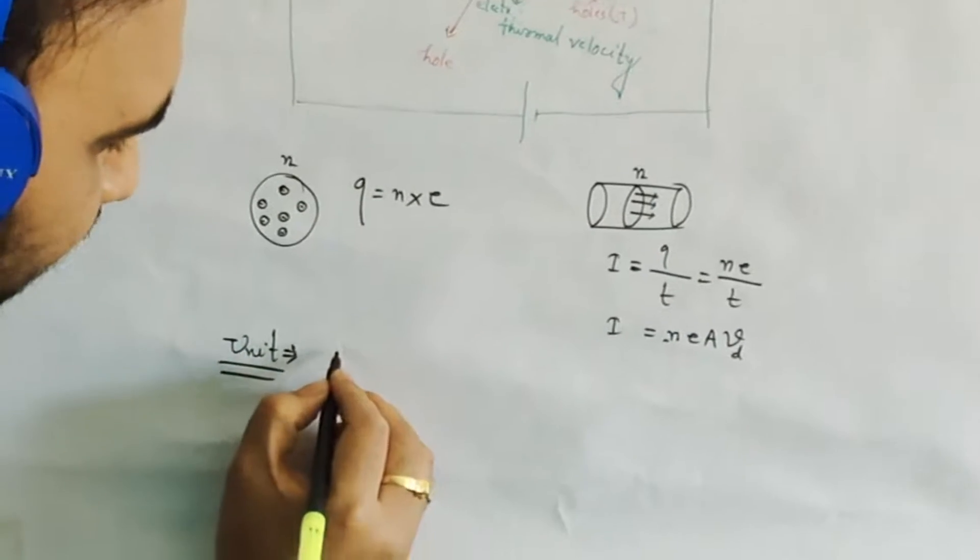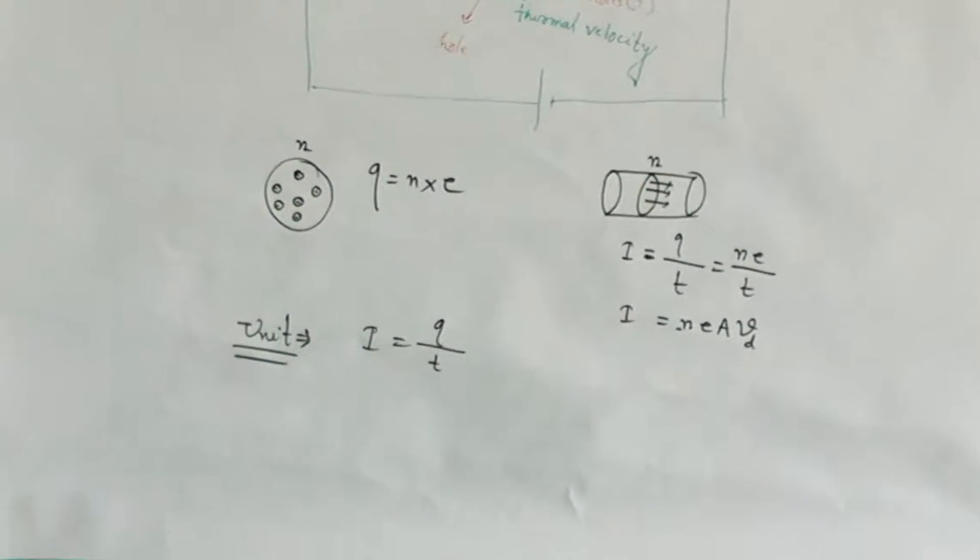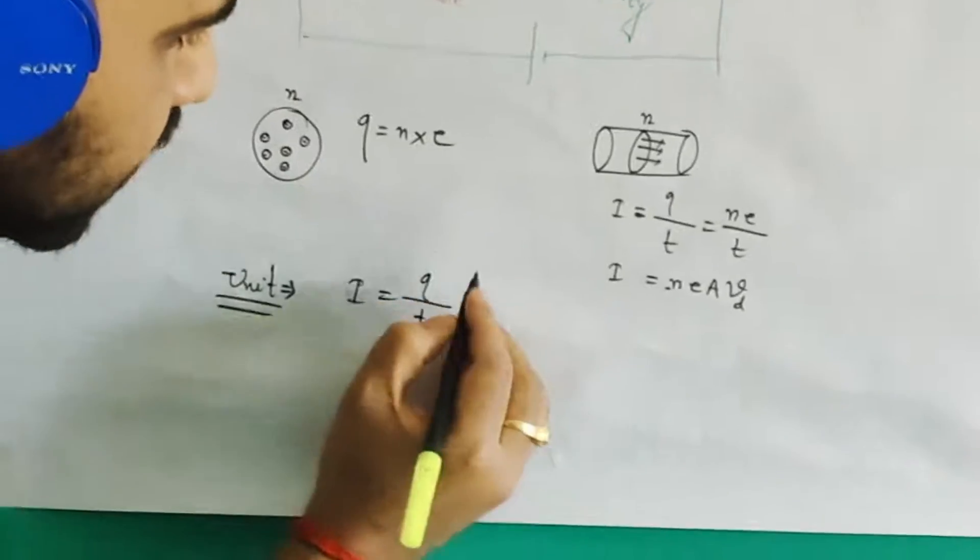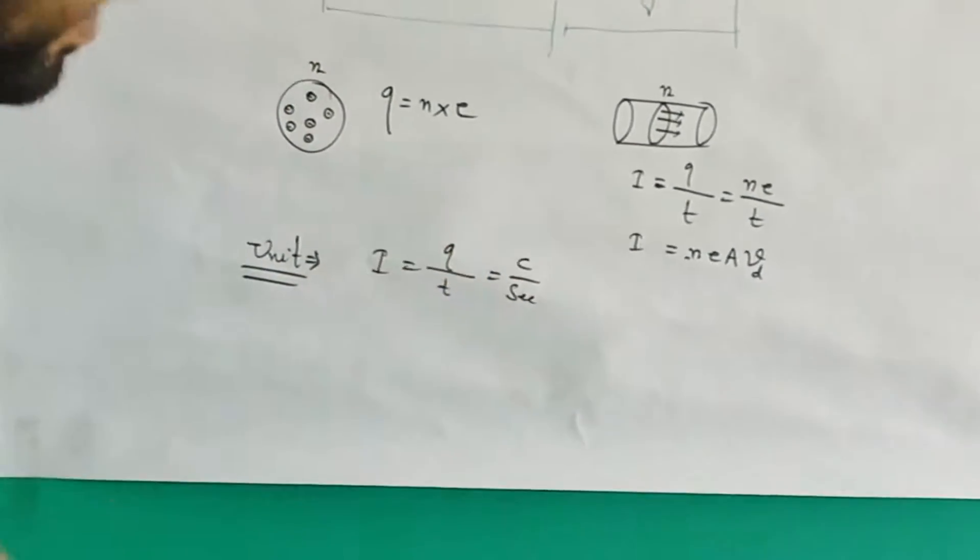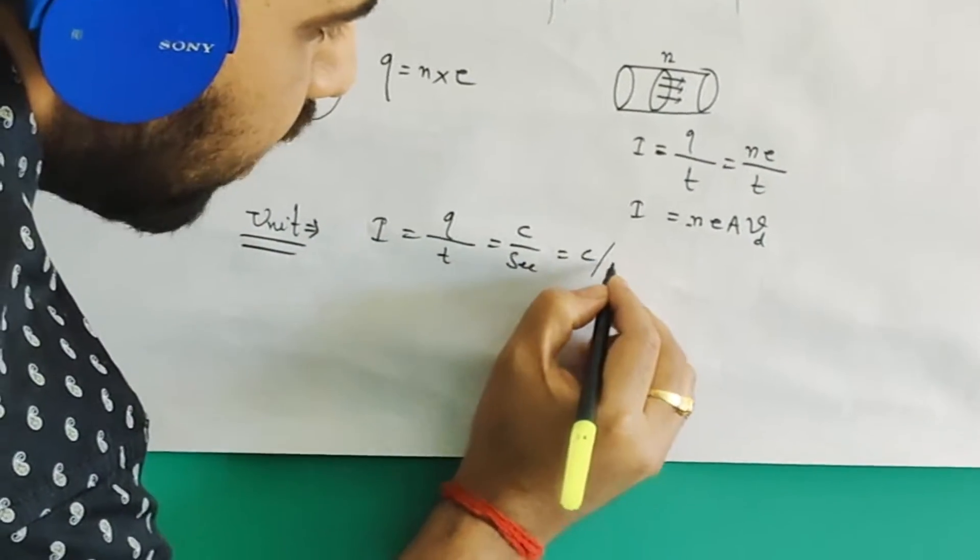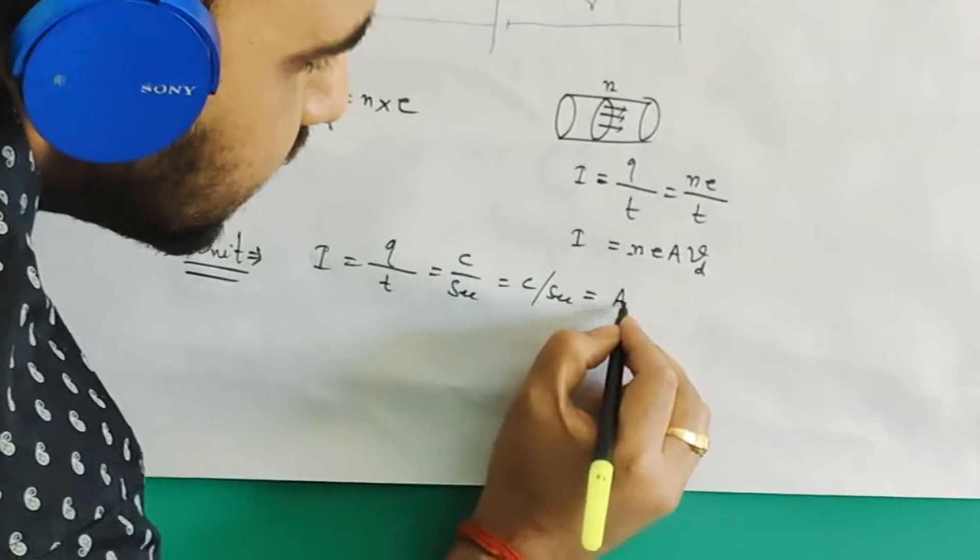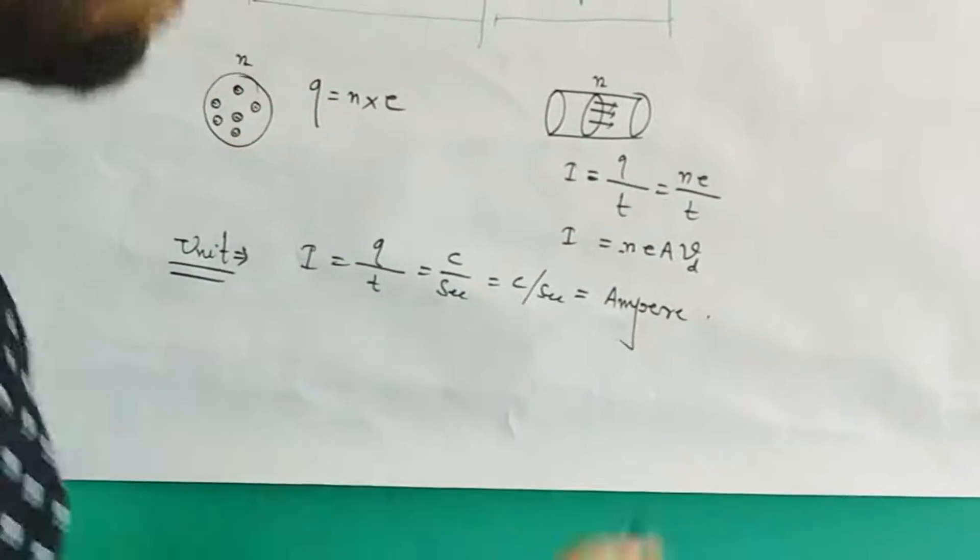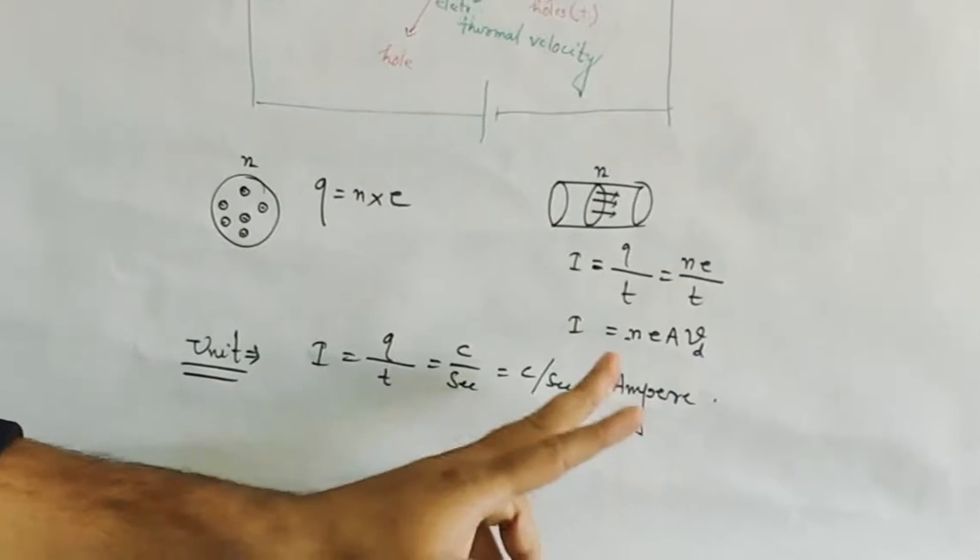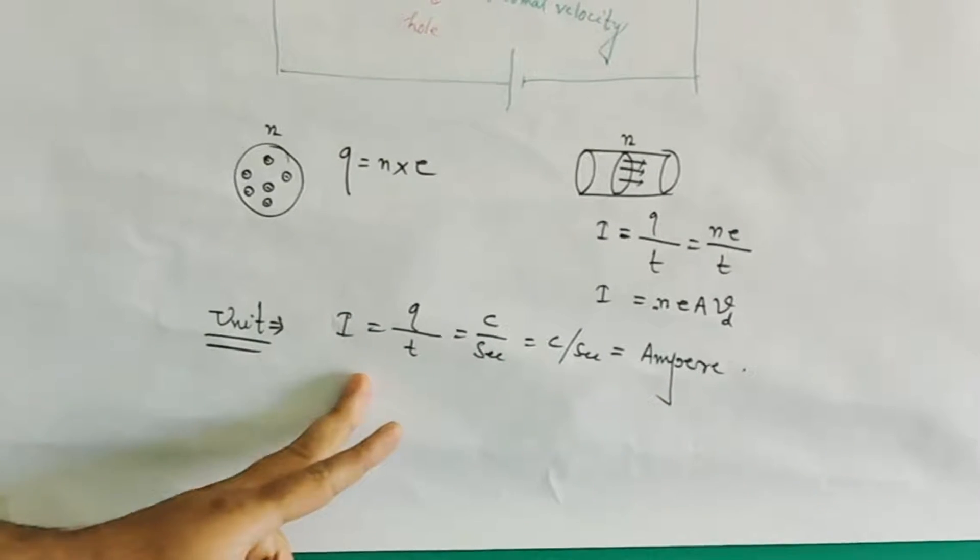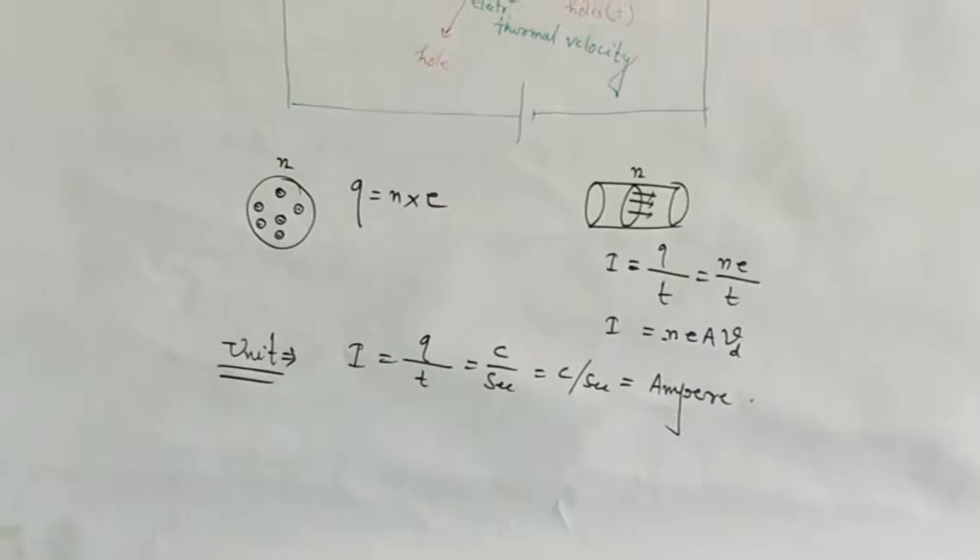For current, I = Q/t. Now Q is coulomb and t is second, so we can say coulomb per second. In one word, this coulomb per second is known as ampere. This ampere is the unit of electric current.